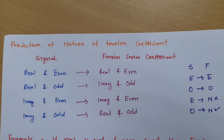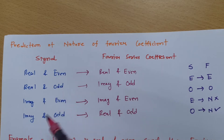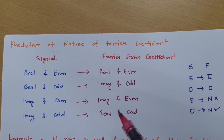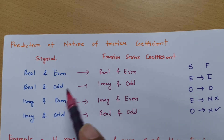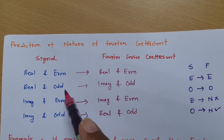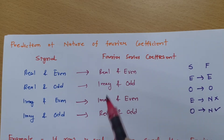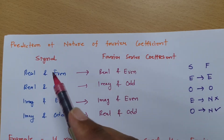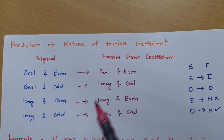So this is what we need to keep in mind: even maps to even, and odd maps to odd. An even signal will not change the nature, while an odd signal will change its nature in the Fourier series coefficient. This is what we need to keep in mind to predict the nature of Fourier coefficients.